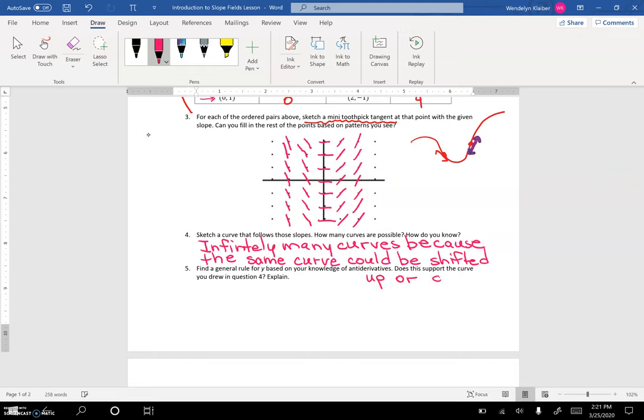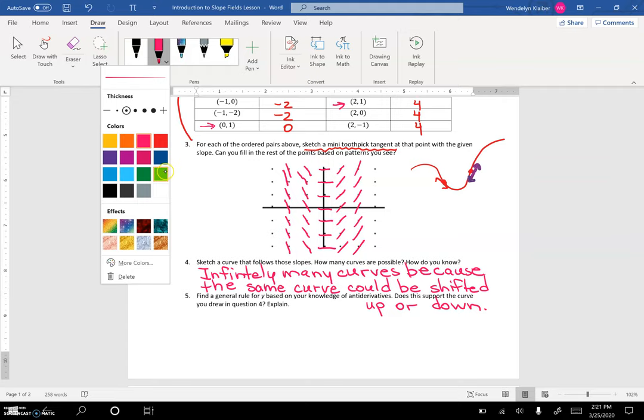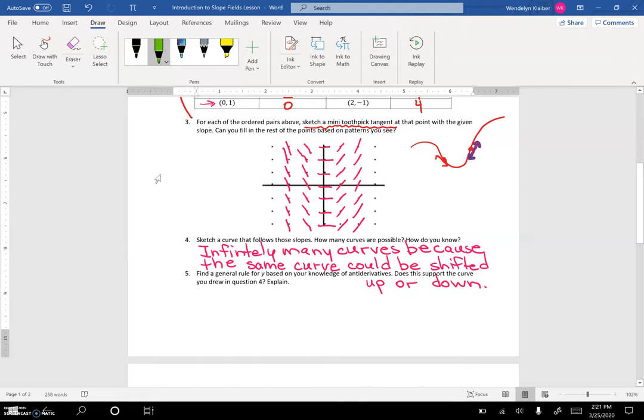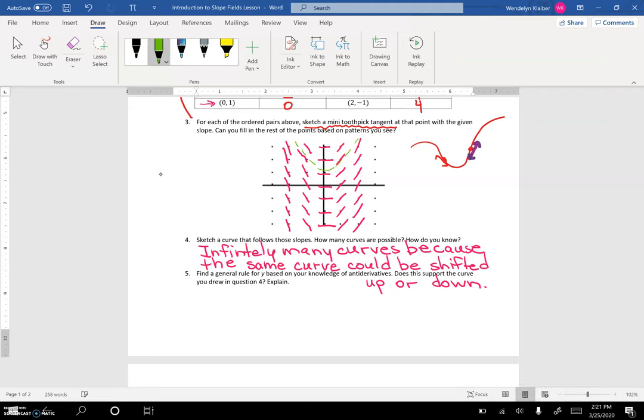I'm going to draw a few possible solutions using a dotted line. Let's use green. I could have a curve that looks something like this. Or if I shifted it, my curve could go something like this. Notice what I'm basically doing—I'm following the pattern of these slope curves, these little tangent toothpicks. They're kind of like the wind direction on weather maps. It's very similar. Now, why are there infinitely many solutions to a differential equation? That's because of the plus c.